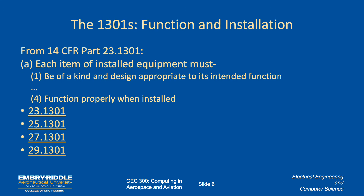Under Parts 23, 25, 27, and 29, each has a section 1301. It says, pretty simply: each item of installed equipment must be of a kind and design appropriate to its intended function, and it has to function properly when installed. So it has to be what it says it's going to be, and it has to work. It seems funny to have to articulate that, but legally you really do have to say what it is, what it's going to do, and that it ought to do what it says it's going to do.